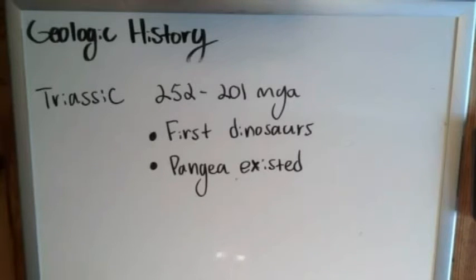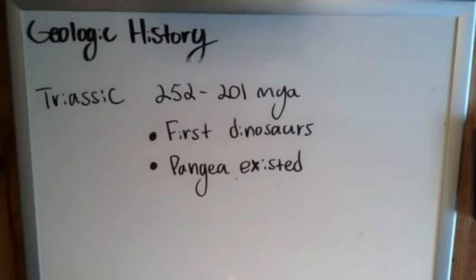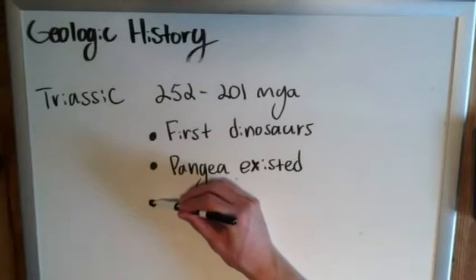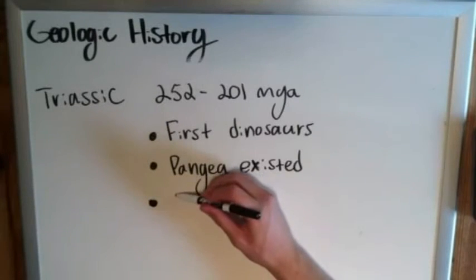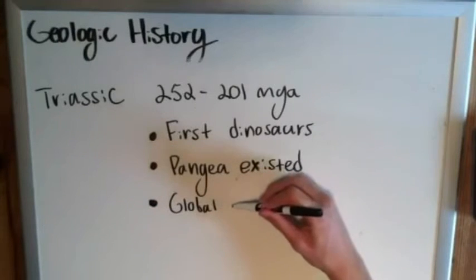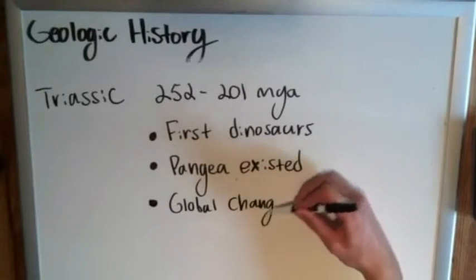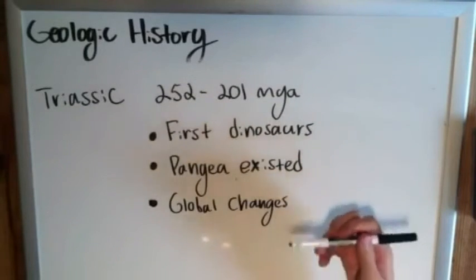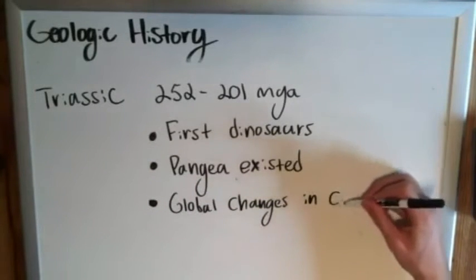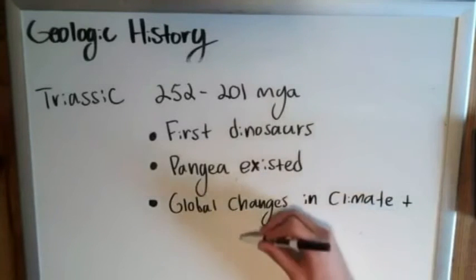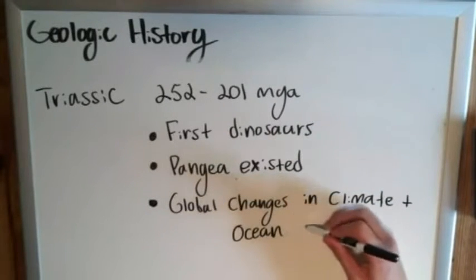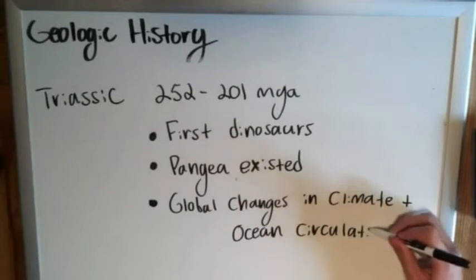Pangaea served as good evidence for Alfred Wegener in developing his theory of plate tectonics, based on the fact that we could find different fossils in different locations that today have completely different climates. He thought these continents must have been connected at one point, so there must be some internal force. But plate tectonics is a whole other topic. We're just looking at key events. We also have global changes in climate, which result in that sort of muggy, swamp-like climate we usually associate with dinosaurs in the Mesozoic era, as well as changes in ocean circulation.